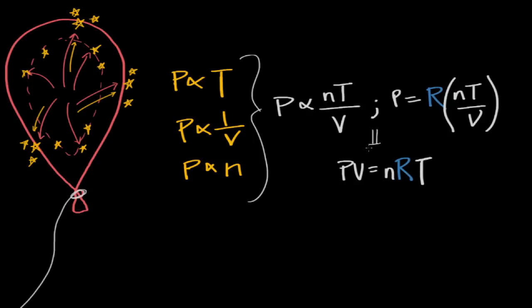Which is PV is equal to nRT. So PV equals nRT. And we call this the ideal gas equation.